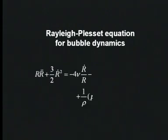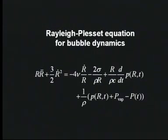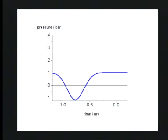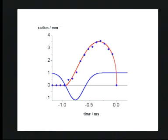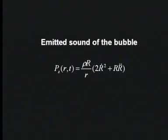We set up a model based on the Rayleigh-Plessis equation to study the bubble dynamics. In this model a Gaussian pressure drop was used to reproduce the bubble radius as a function of time, as also observed in the experimental high-speed video recordings. From the dynamics of the bubble the sound pressure curve was calculated.